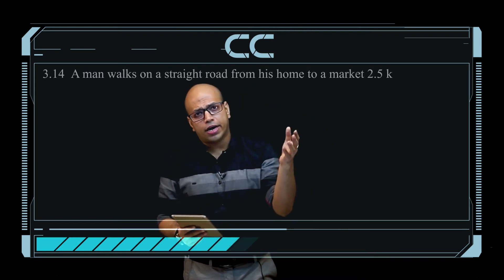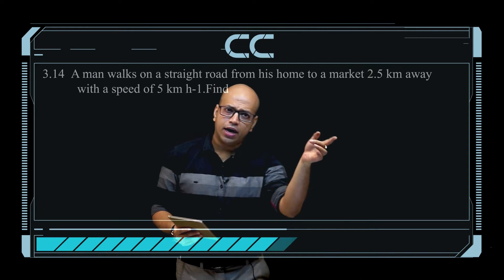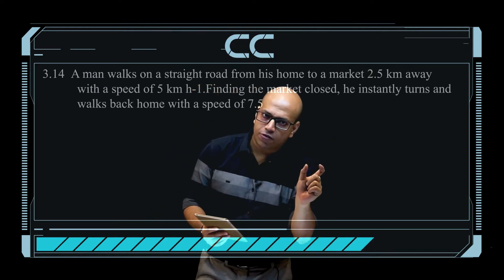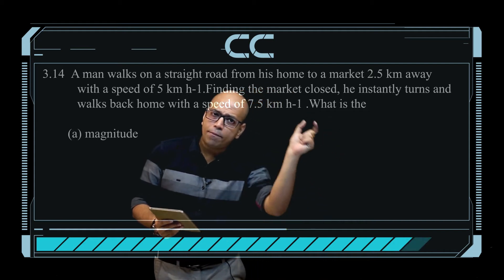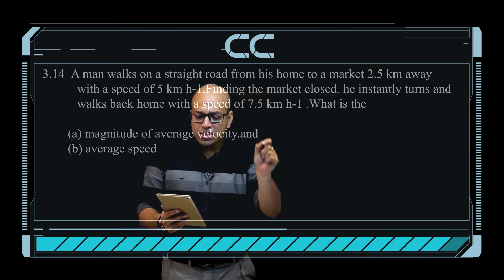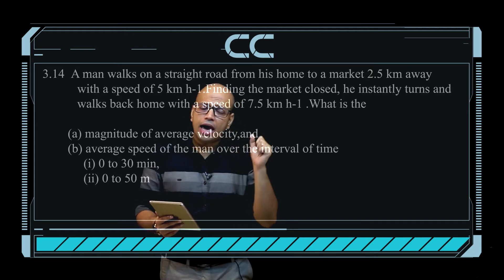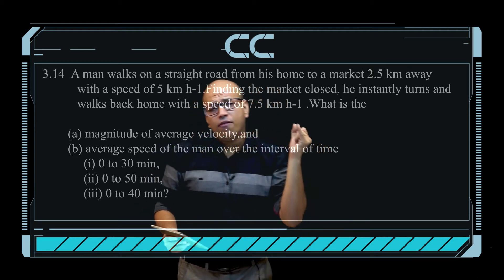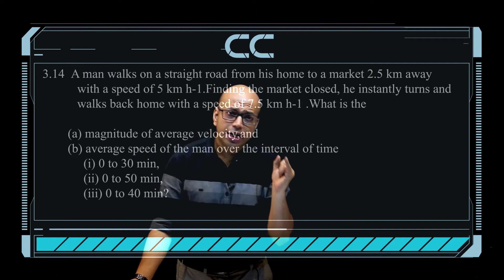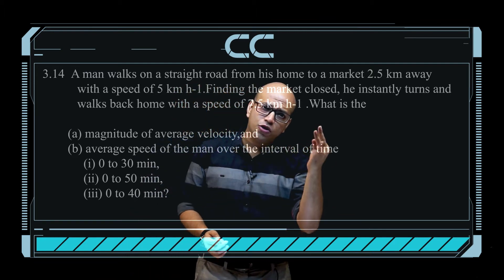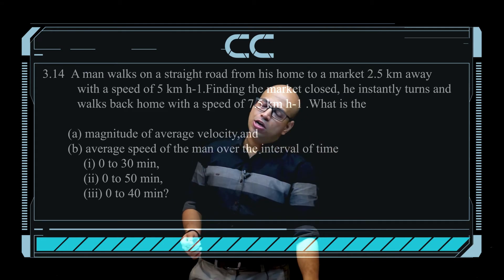...on a straight road from his home to a market which is 2.5 kilometers away with a constant speed of 5 kilometers per hour. Now from the market, he walks back home with a speed of 7.5 kilometers per hour. We need to find the average velocity and average speed during the intervals 0 to 30 minutes, 0 to 50 minutes, and 0 to 40 minutes. Let's solve this sum.